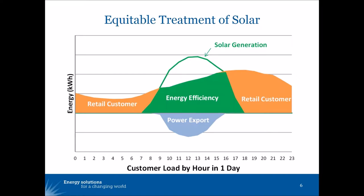The other topic is equitable treatment of solar. This graphic shows in orange the times of day — overnight and evening — when a solar customer is basically a retail customer taking power from the grid. The green section is the load the customer serves itself with solar, which has essentially the same effect as energy efficiency would on the utility load.